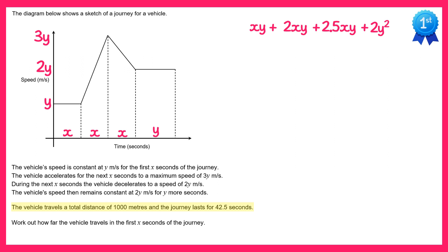We can simplify this a little bit. We've got three terms here of xy, so we've got 1xy add 2xy add 2.5xy which is 5.5xy plus 2y squared. And since we know this is the same as the total distance, this must equal 1000.